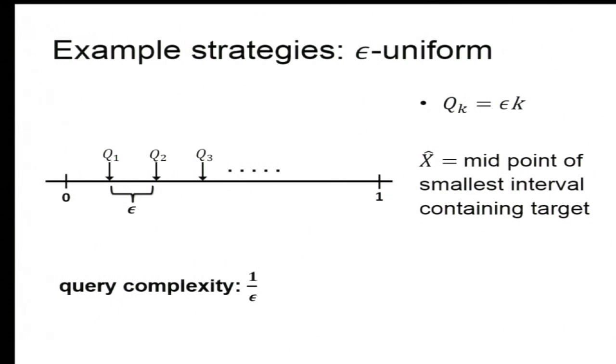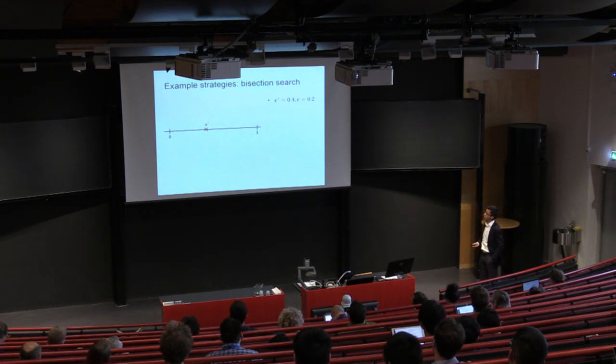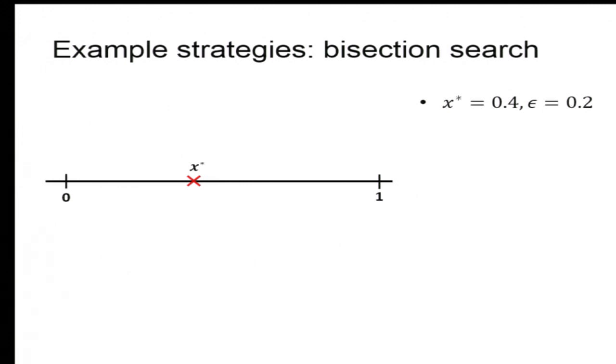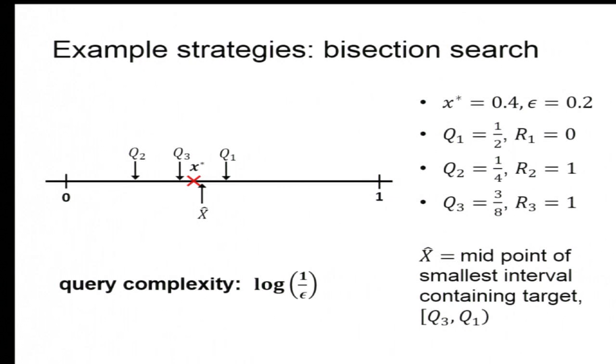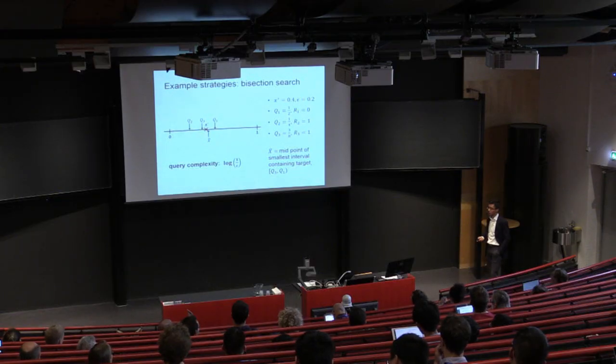Two very simple examples. Let's look at the simplest policy. Let's call that epsilon uniform. I simply bombard the entire interval deterministically with a grid of size epsilon, q1, q2, q3, and so on. Clearly, I can produce the estimator. I simply look at the midpoint of the interval containing the target, and I get a complexity of 1 over epsilon. Pretty inefficient, but does the job. Let's do a little better. So this is bisection search. Let's say in this example, the truth is 0.4, and I want to learn it within 0.2. I put the first question right in the middle. Tells me it's left. I go left, put in the middle. Tells me it's right. So I go to the right, put in the middle of that interval. And now I'm pretty confident I found the answer. So I produce estimator being the mid of the smallest interval known to contain the target. And this gives me an exponential reduction in complexity. Very simple stuff, just two examples.